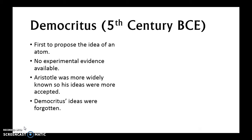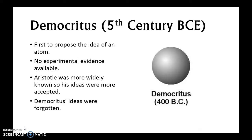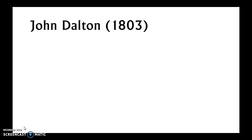Democritus' ideas were forgotten for almost 2,000 years. Here is Democritus' atomic model — it looks just like a sphere, a ball. He did have this idea that the ball would be slightly different for a solid, a liquid, and a gas, so he described that as well.